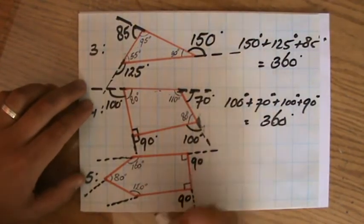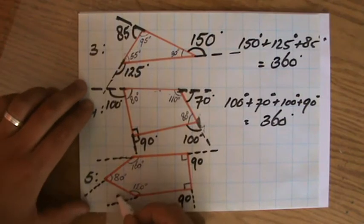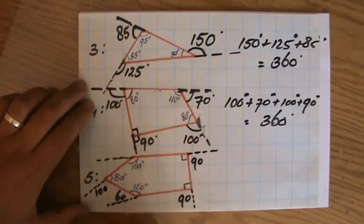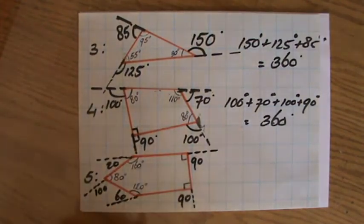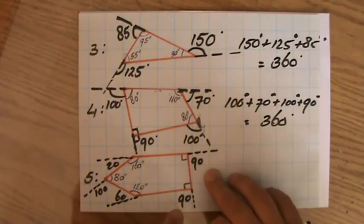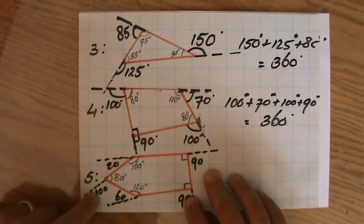Right angle, so this one is 90, that one is 90 degrees. 120 on the inside, 60 on the outside. 80 on the inside, 100 exterior. 160 interior, 20 on the outside. What is the sum of the exterior angles for the pentagon? 90, 180, 280, 300, 360 degrees.